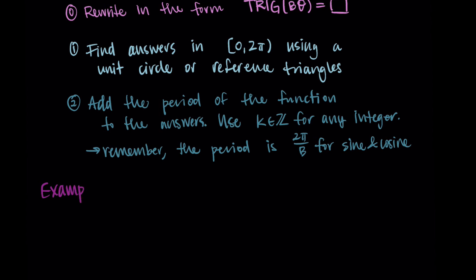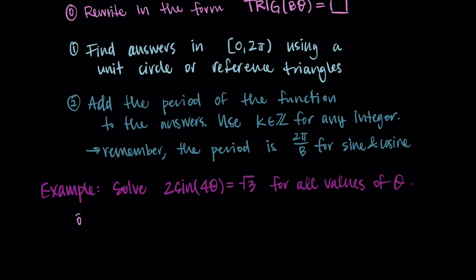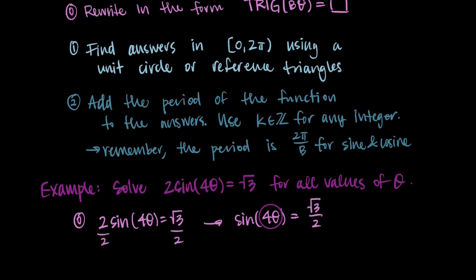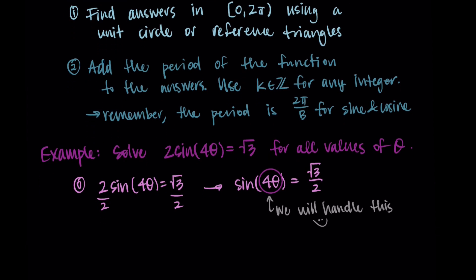Let's try it out on some examples. For our first example, let's solve the equation 2 times sine of 4θ equals square root of 3 for all values of θ. Our first step is to isolate the trig function, so I'm going to divide both sides by 2, getting sine of 4θ equals square root of 3 over 2. We need to be careful to handle this 4θ — I'll circle it to indicate it's just some input for our function, so it's sine of something equals square root of 3 over 2.